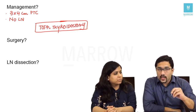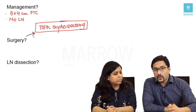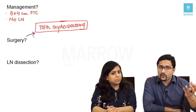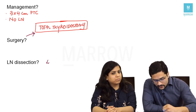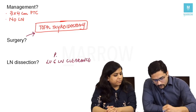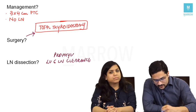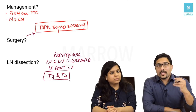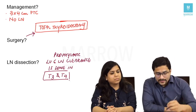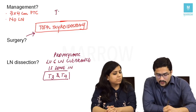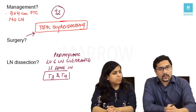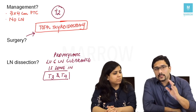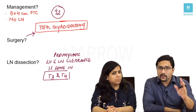The lymph nodes were not enlarged, so is there a role for prophylactic lymph node dissection? Prophylactic level 6 lymph node clearance is done in T3 and T4 lesions. This is a T2 lesion — T2 being 2 to 4 centimeters — so it is not a T3 or T4 lesion. Therefore, the only surgery in this case is a total thyroidectomy.